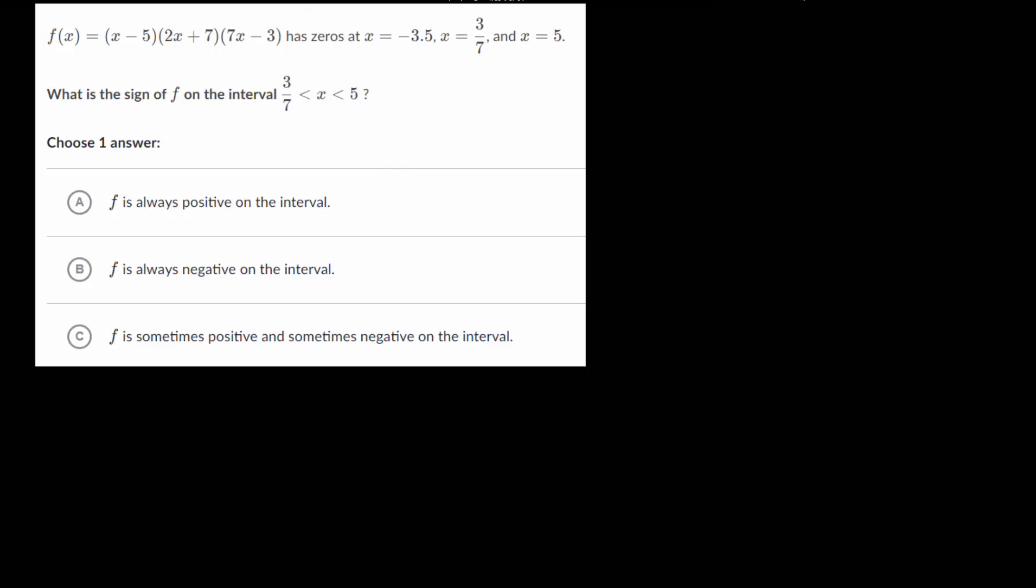Let's draw a quick sketch of this and then we can think our way through this problem. So we'll label what the zeros are, so it goes through at 3/7, maybe that's right there.